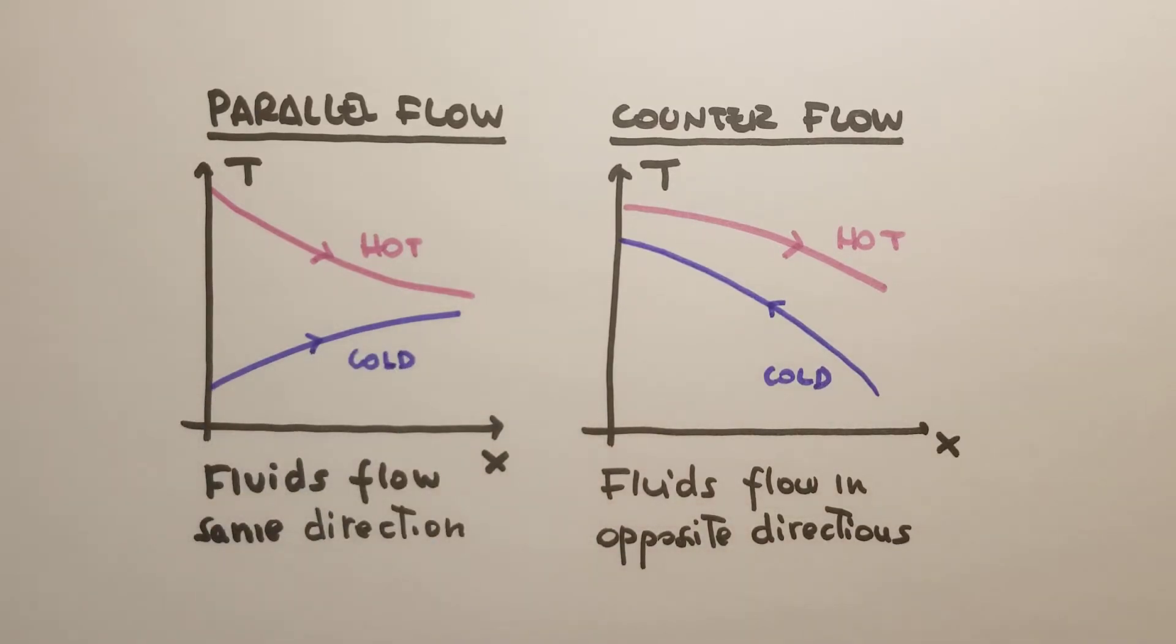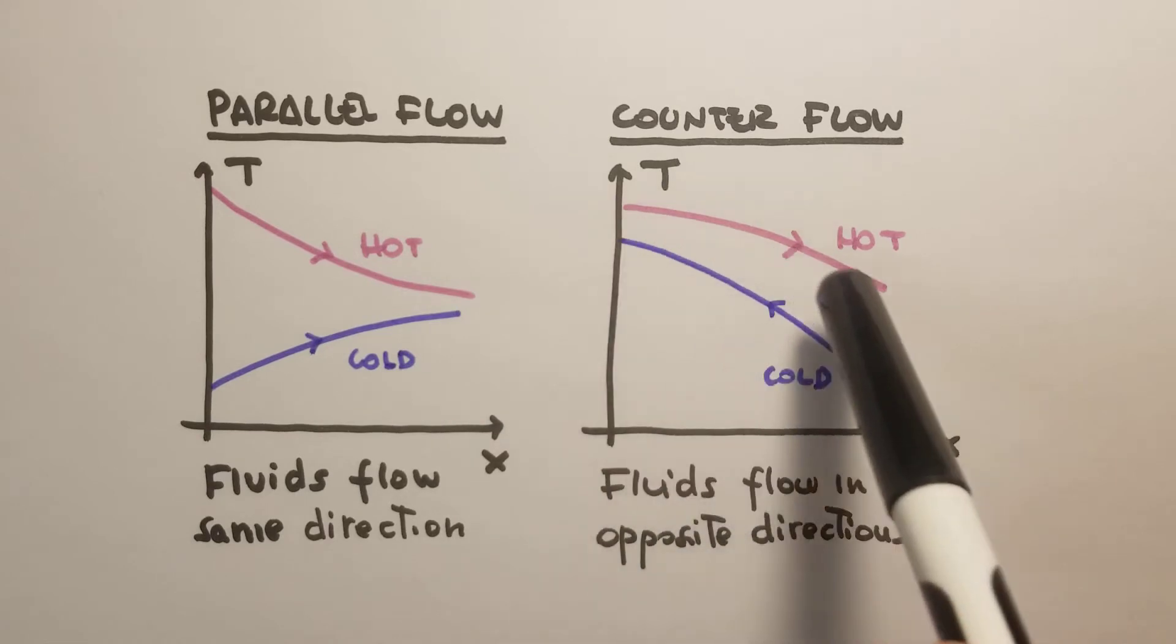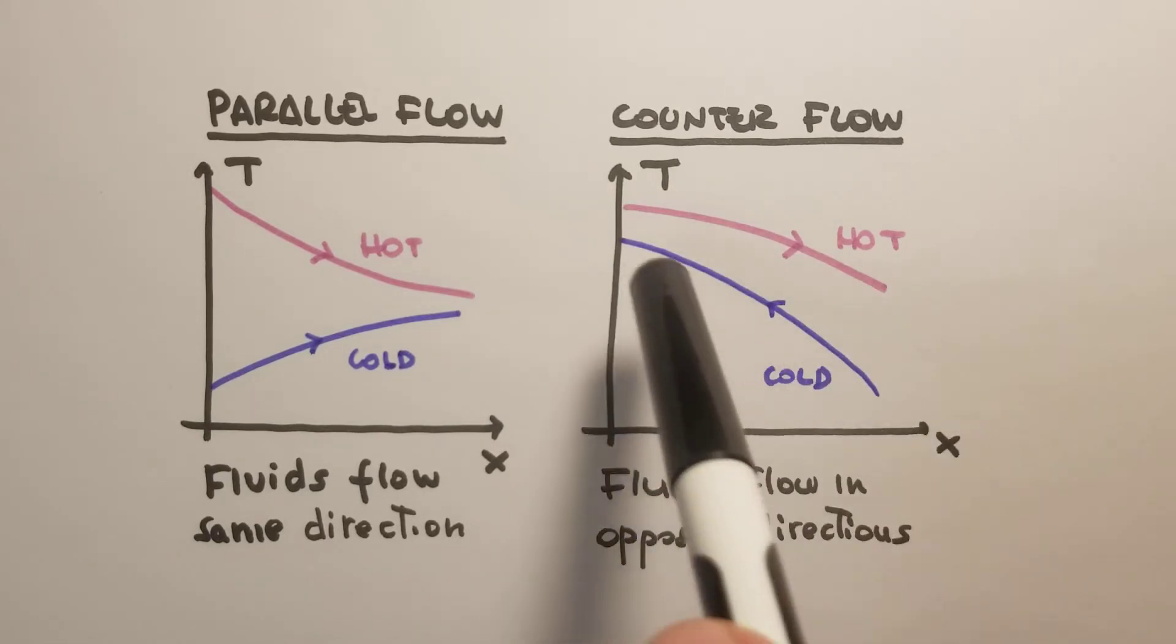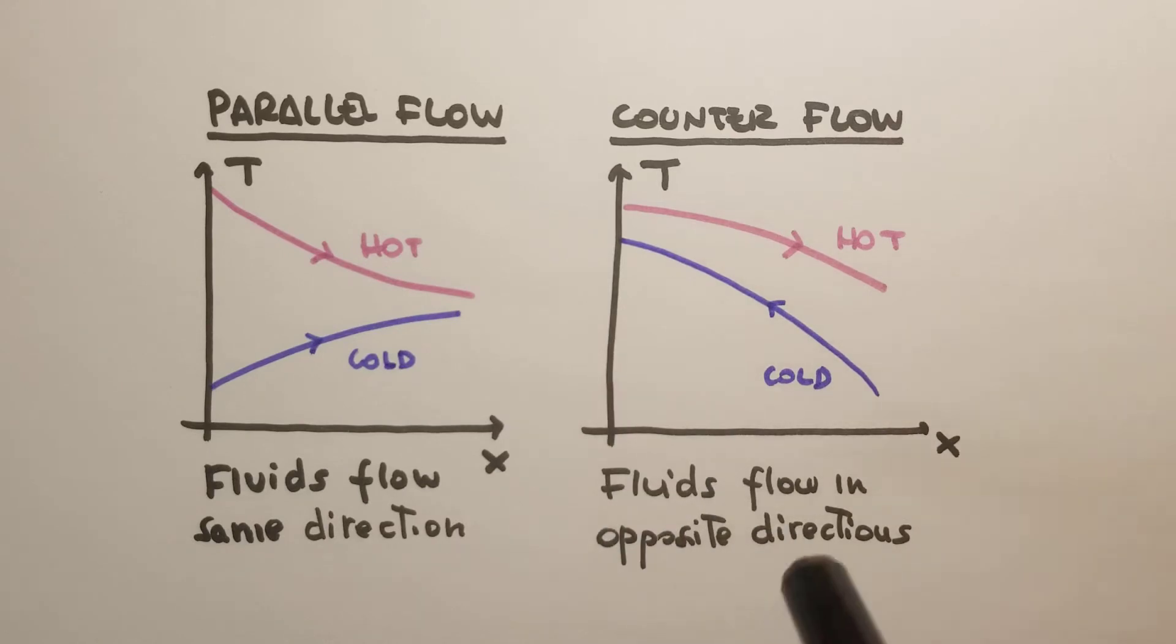In the counter flow, the fluids flow instead in the opposite direction. The hot fluid also has a drop in temperature and the cold fluid increases the temperature. In this situation, the exit temperature of the cold fluid can be larger than the exit temperature of the hot fluid, and this can never happen in the parallel flow configuration.